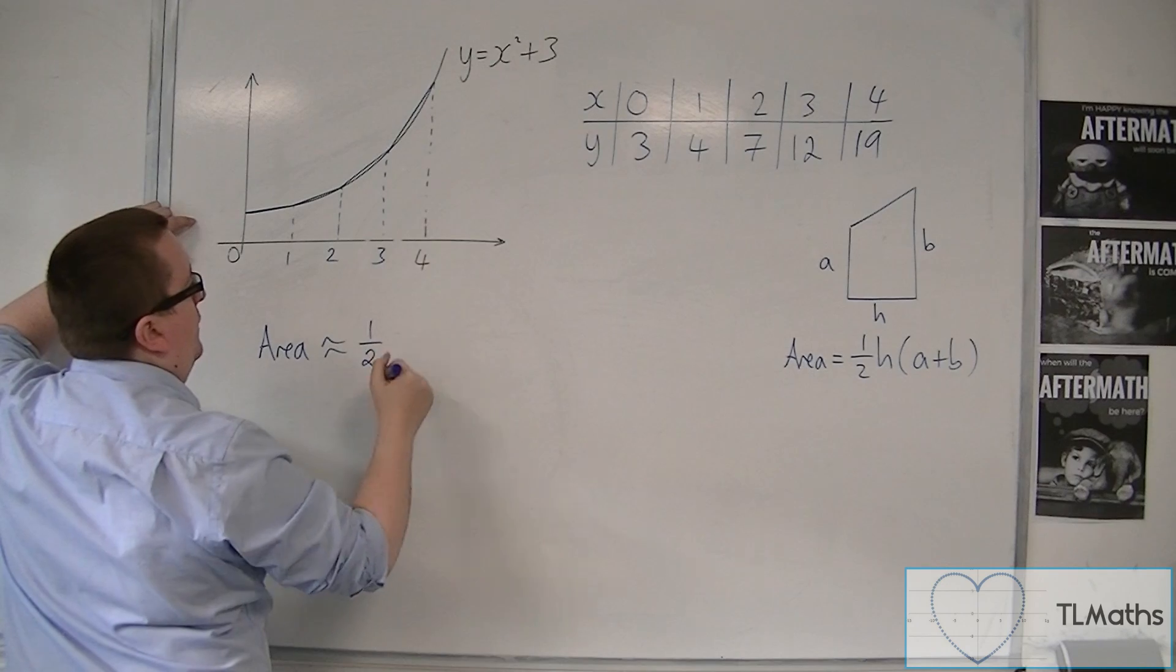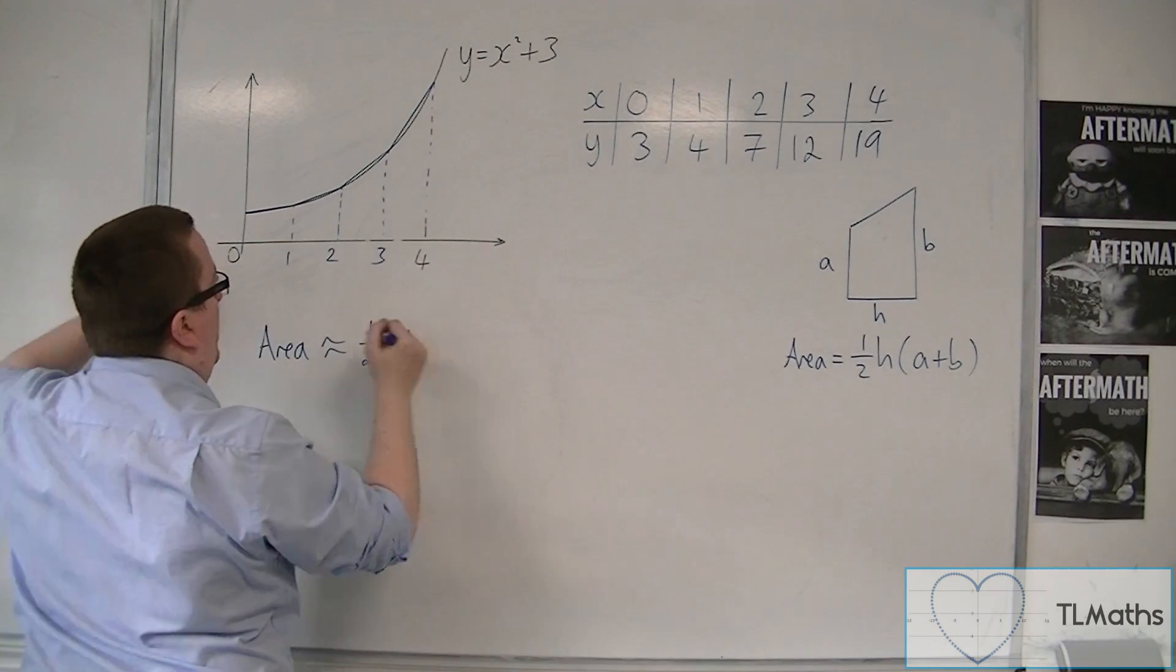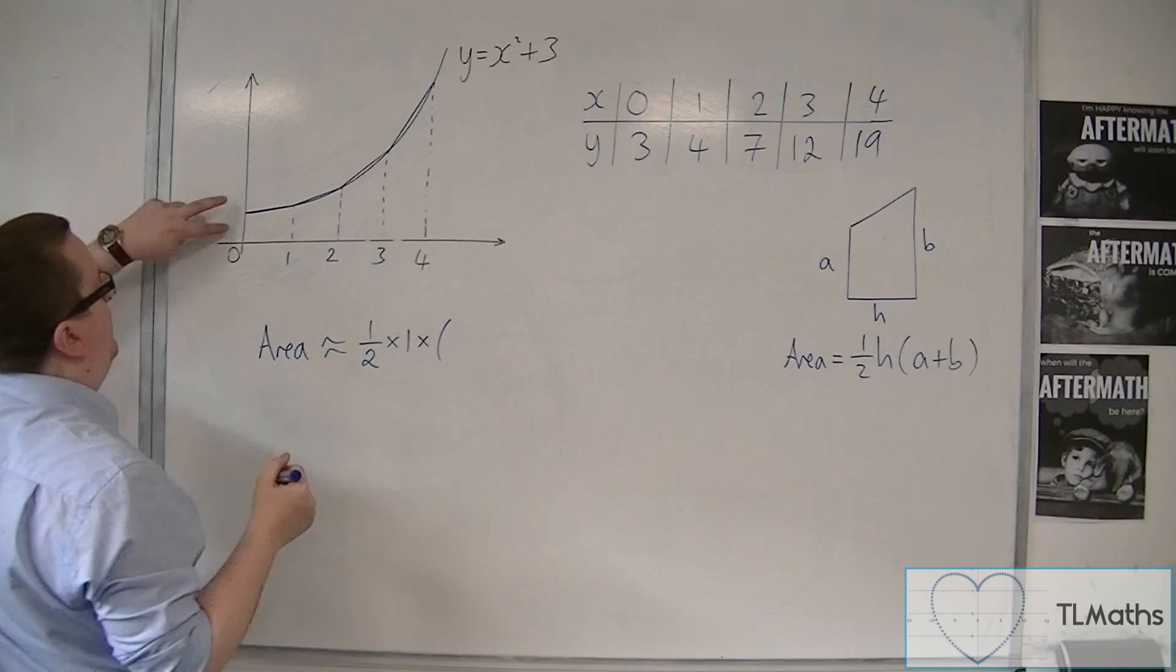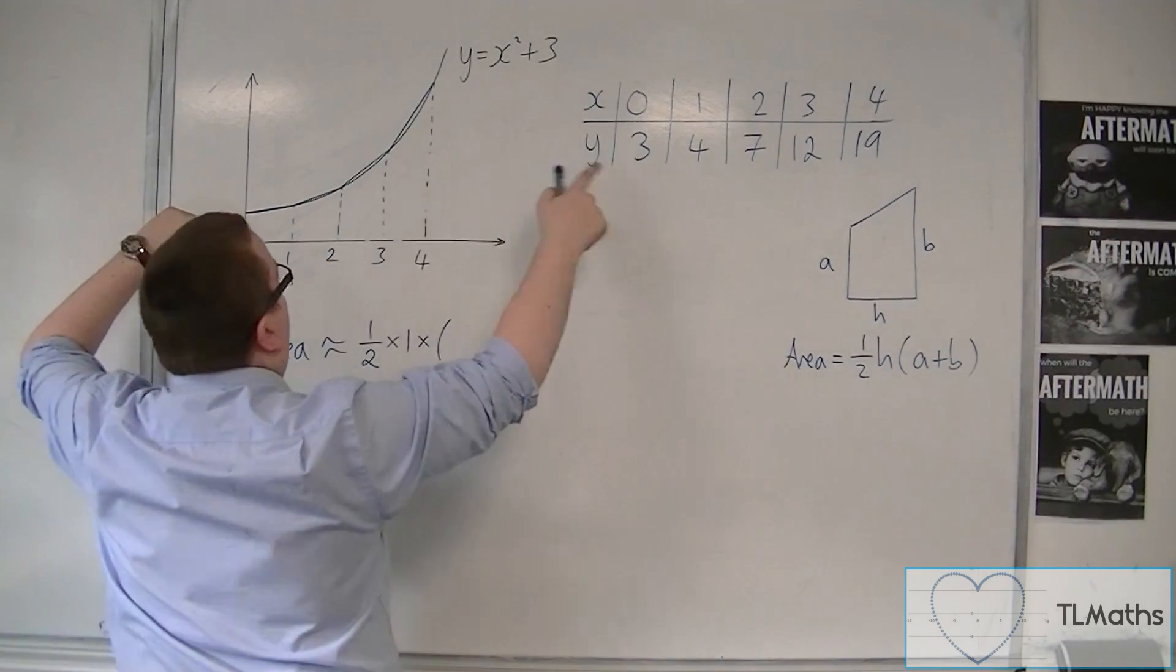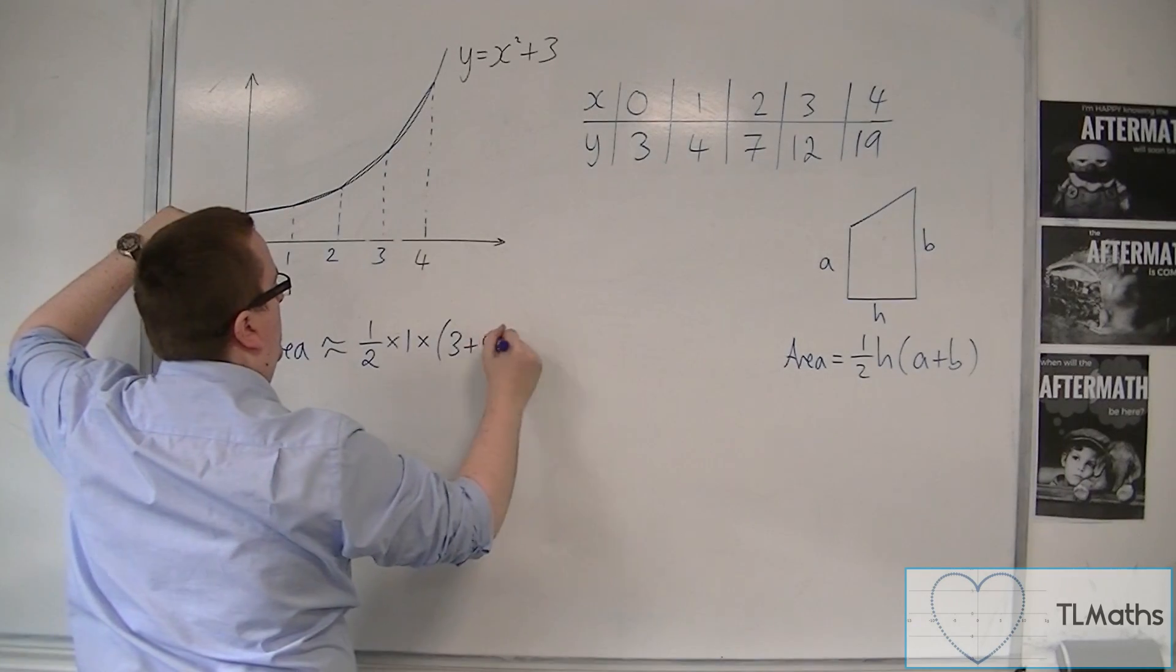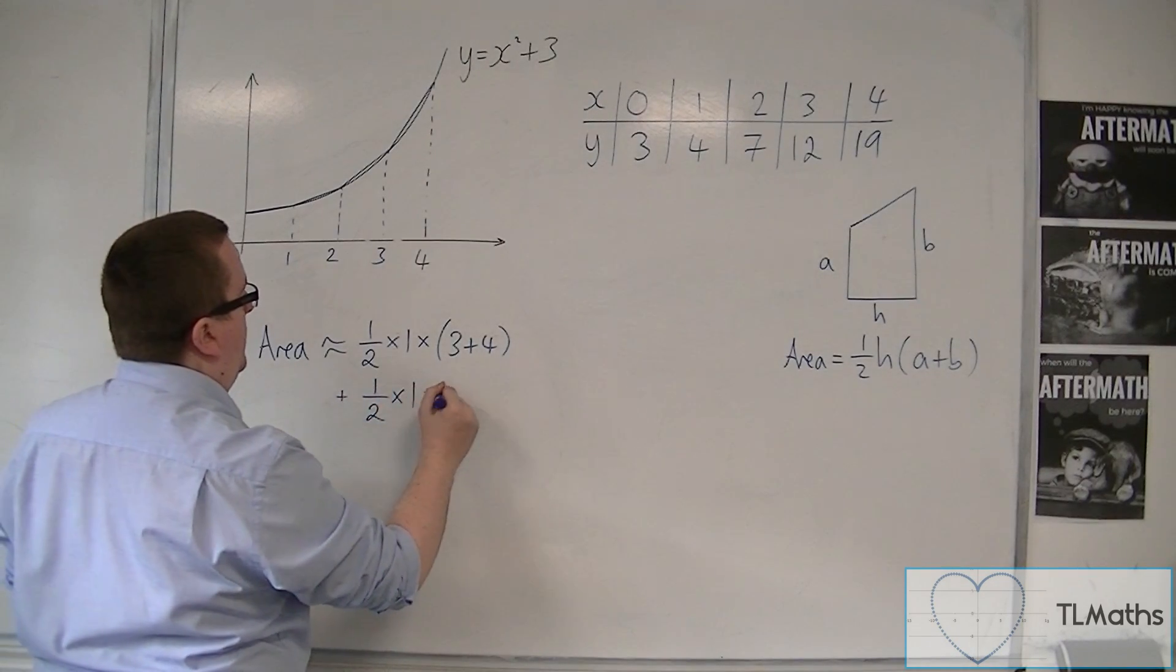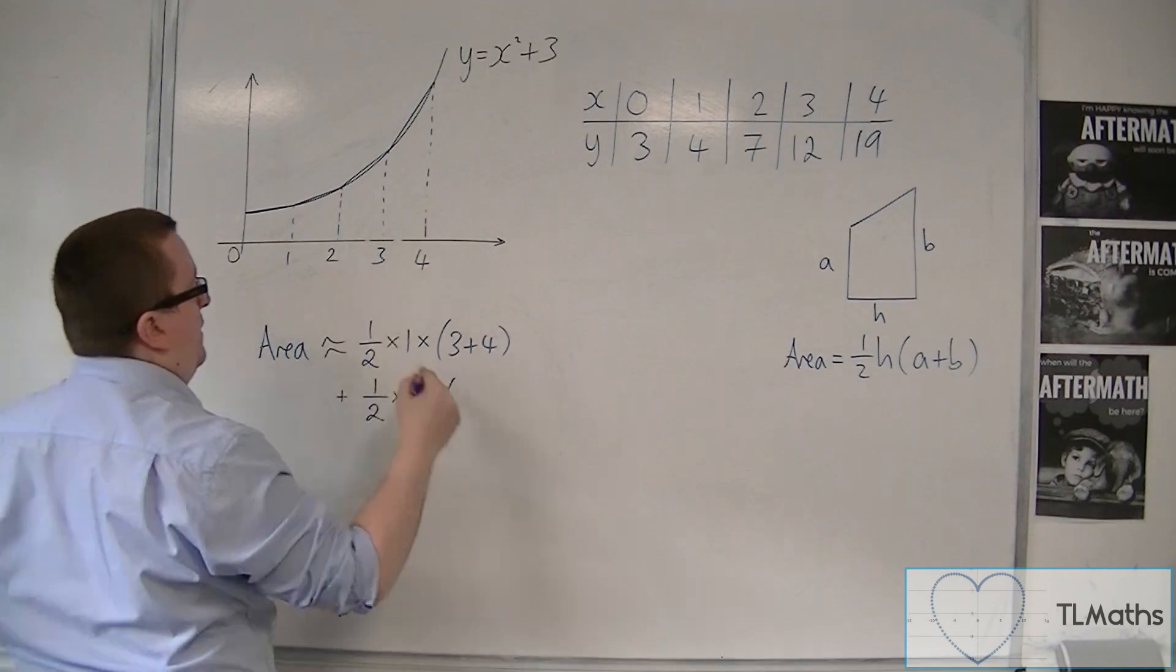Now, H is the width of each strip, so 1, times by A plus B. Now, A is the side, and B are the side lengths. So in this case, it's 3 and 4. OK? So that's the first one, plus 1 half times the width times 4 plus 7 this time.